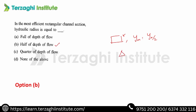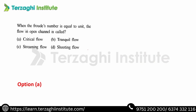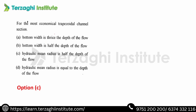For various channel shapes, the hydraulic mean radius values are: rectangular channel — R = y₀/2; triangular channel — R = y₀/(2√2); trapezoidal channel — R = y₀/2; circular channel — R = 0.29 times the depth of water. When Froude number equals unity, the flow in an open channel is called critical flow. For the most economical trapezoidal channel section, hydraulic mean radius is half the depth of flow.